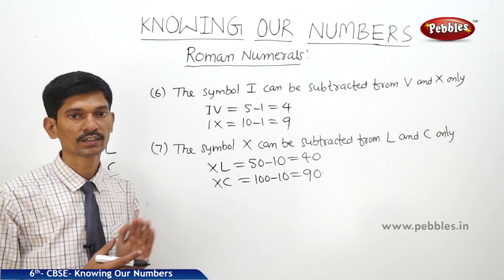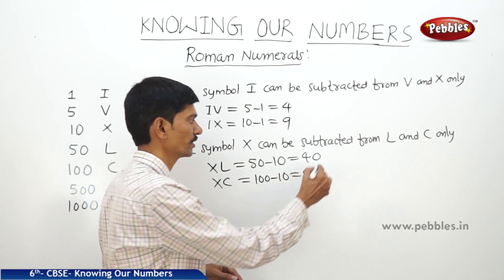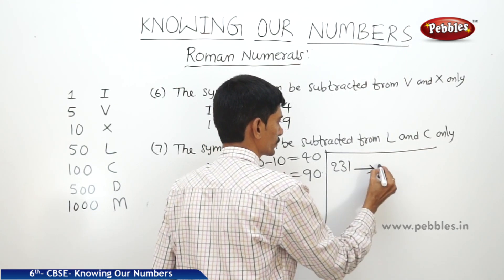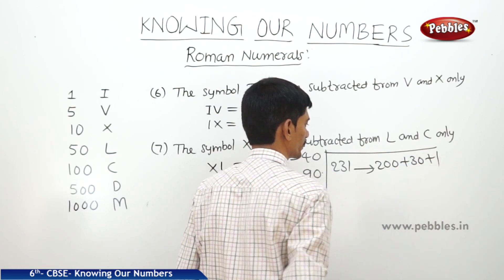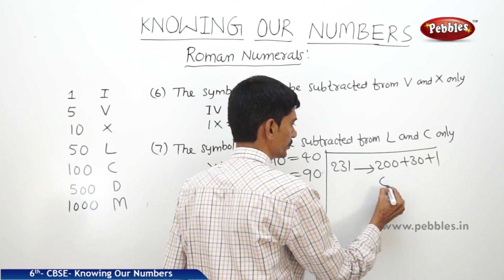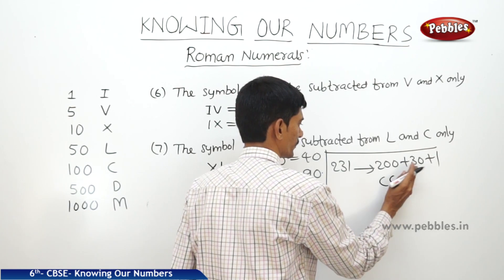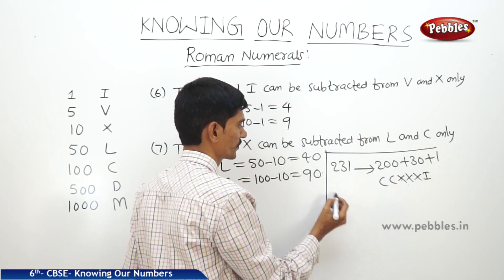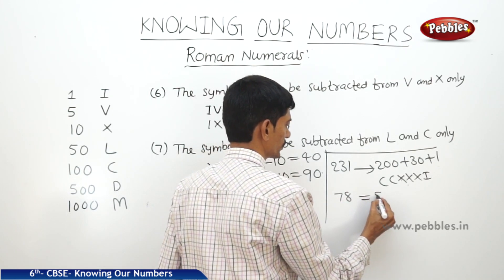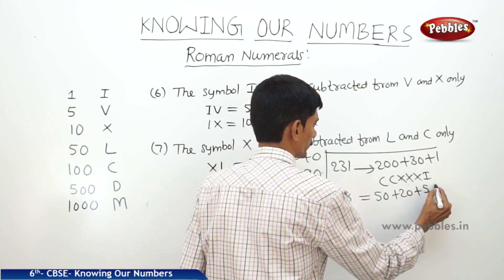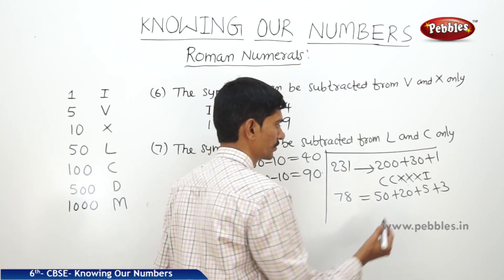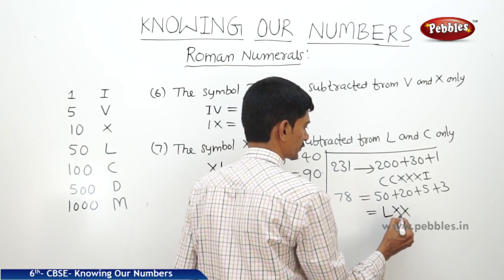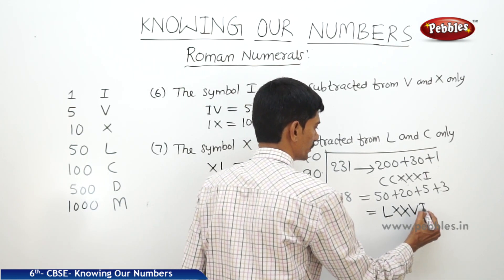Using these seven rules we can write any Hindu-Arabic numeral as a Roman numeral. For example, 231 equals 200 plus 30 plus 1, so we write CC for 200, XXX for 30, and I for 1, giving CCXXXXI. For 78: 50 plus 20 plus 5 plus 3, so L for 50, XX for 20, V for 5, and III for 3, giving LXXVIII.